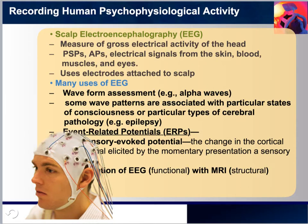Psychologists are more often interested in the EEG waves that accompany certain psychological events than in the background EEG signal. One commonly studied type of event-related potential is the sensory-evoked potential — the change in the cortical EEG signal elicited by a momentary presentation of a sensory stimulus. Seeing what that does to our brain can bring about confirmation about our understanding of the brain.